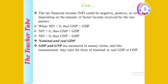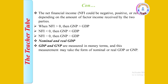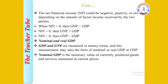GDP and GNP are measured in terms of money — they are monetary measures. Measurement can be taken in terms of nominal GDP, which is the monetary value of currently produced goods and services measured at current prices.